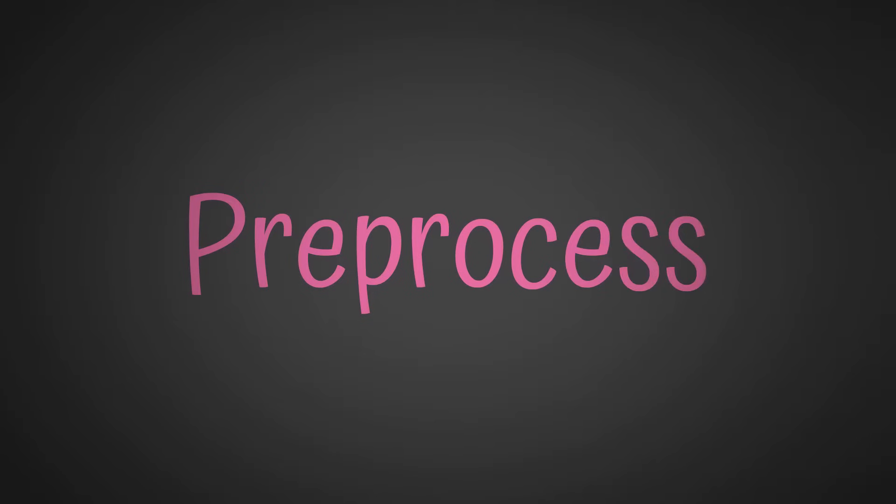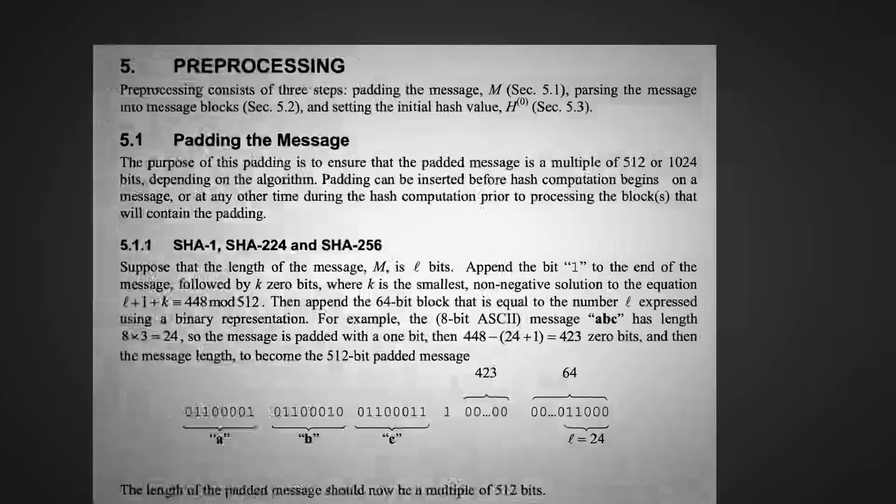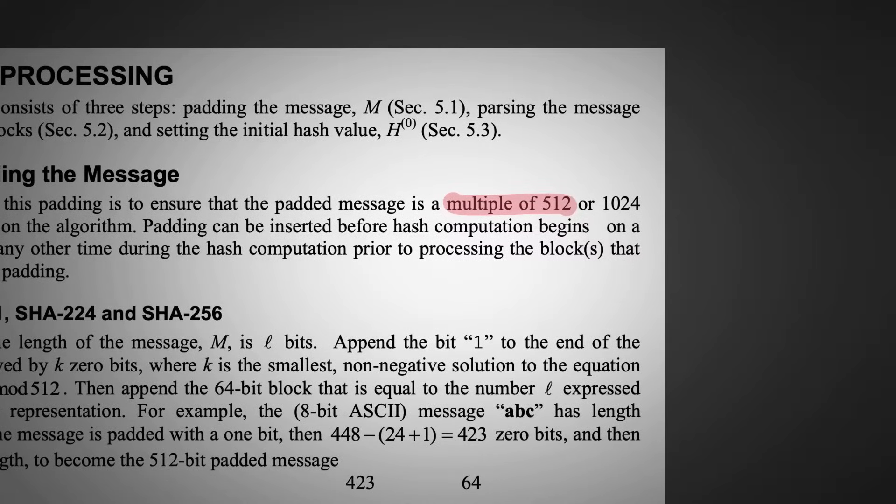Before we get to the calculation part, we'll have to do some pre-processing. The purpose of this is because we need the input to be a multiple of 512, and at the moment, it is of length 96.